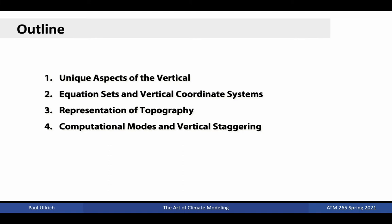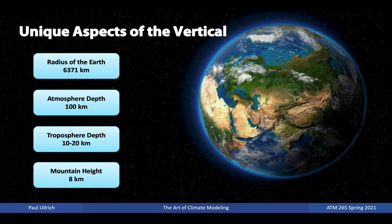As you're likely aware from previous courses, the atmosphere is a very thin layer around the Earth. While the mean radius of the Earth is 6,371 kilometers, the atmosphere only adds an additional 100 kilometers, and of that 100 kilometers, most shallow global atmosphere models are only designed to capture the troposphere accurately — that is, the lower 10 to 20 kilometers. This is in contrast to deep atmosphere models such as the Whole Atmosphere Community Climate Model, or WACCM, which is based on CESM and capable of capturing the atmosphere up to the thermosphere.